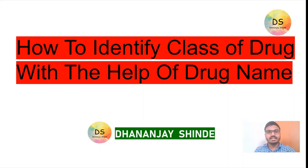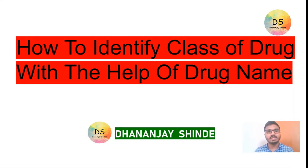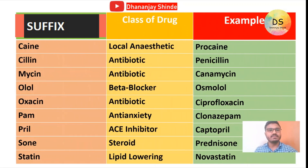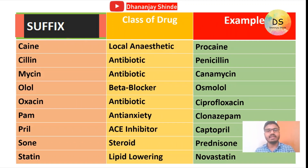Hello everyone, myself Dananjay Shinde, and in this video I am going to tell you how to identify the class of a drug with the help of its name — how we can identify a drug's class from its name. I will tell you this in this video. Here we go. Have a look at the table. I have mentioned here: suffix of drug, class of drug, and example. Now, what is a suffix? In simple language, the ending of any drug name is called its suffix.